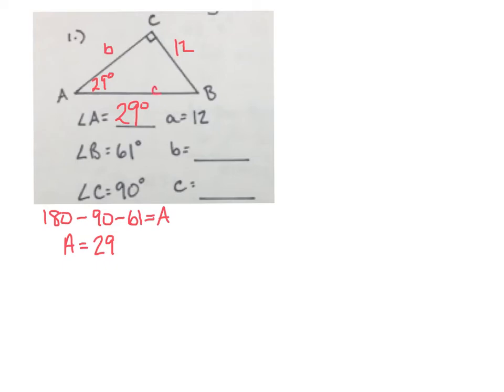Let's find side b first. Since I have an angle, its opposite side, and side b is its adjacent side. Opposite and adjacent means tangent. So the tangent of 29 degrees is going to be 12 over b.